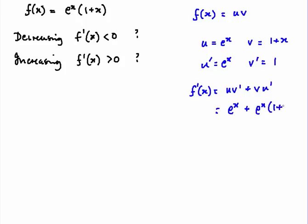Which will give us e to the x times 1 plus e to the x times 1 plus x. Multiply out the bracket: e to the x times e to the x, we will get two lots of e to the x plus x e to the x. Then I'm just going to factorize.